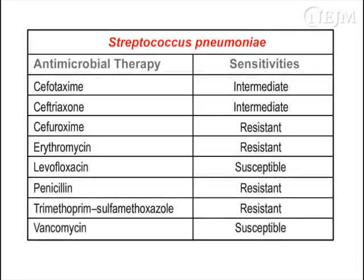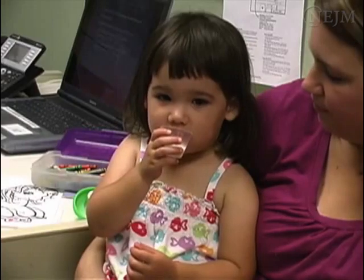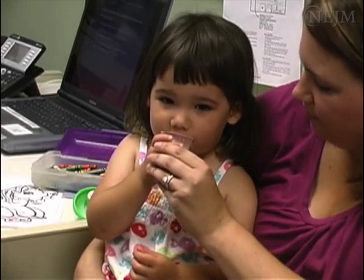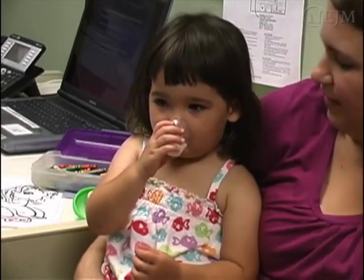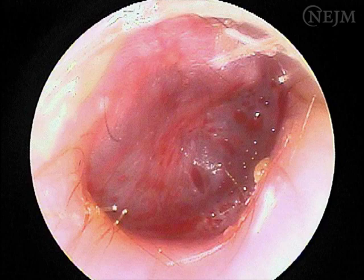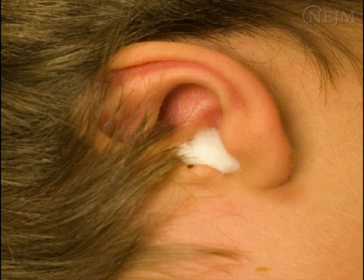Gram staining of the middle ear specimen, as well as the susceptibility pattern of the organisms isolated, should be used to guide antimicrobial therapy. The small tympanic membrane perforation made during tympanocentesis usually heals in approximately two to three days, and some serosanguinous drainage during this period is normal. A cotton ball coated with petroleum jelly should be used during bathing to keep water out of the child's external auditory canal for the first three days.